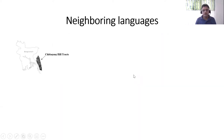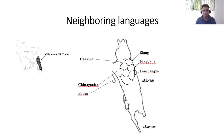The neighboring languages include Chakma, Chittagong, Bom, Riyang, and Tanchangya. Most of these languages are far bigger than Pankwa. So Pankwa is the smallest language in this region, if not in the whole country, Bangladesh.